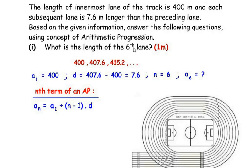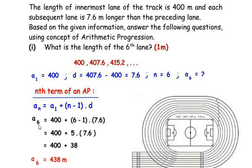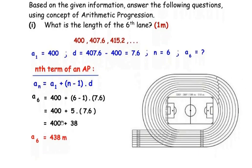Since we need the 6th lane, n equals 6, and we find a6 using the nth term formula: an = a1 + (n − 1) × d. Substituting: a6 = 400 + (6 − 1) × 7.6 = 400 + 5 × 7.6 = 400 + 38 = 438 meters. So the length of the 6th lane is 438 meters.